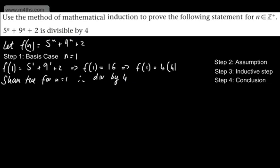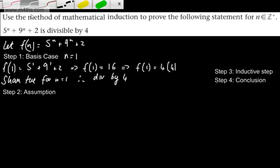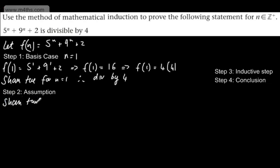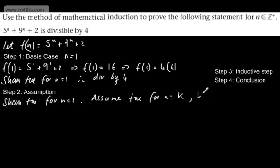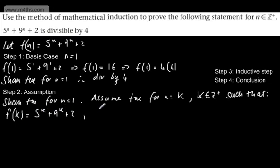That's the basis case done with n equal to 1. We now do step 2, which is the assumption. Assume true for n equal to k, where k is a positive integer, such that f(k) equals 5 to the power of k, plus 9 to the power of k, plus 2. This is our assumption — we've shown it holds true for n equal to 1, and we now assume it's true for n equal to k, with f(k) divisible by 4.